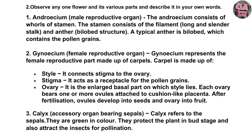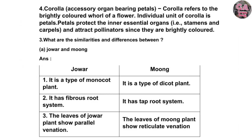Calyx refers to the sepals. They are green in color. They protect the plant in the bud stage and also attract insects for pollination. Corolla refers to the brightly colored wall of the flower. Individual unit of corolla is petals. Petals protect the inner essential organs and attract pollinators since they are bright in color.